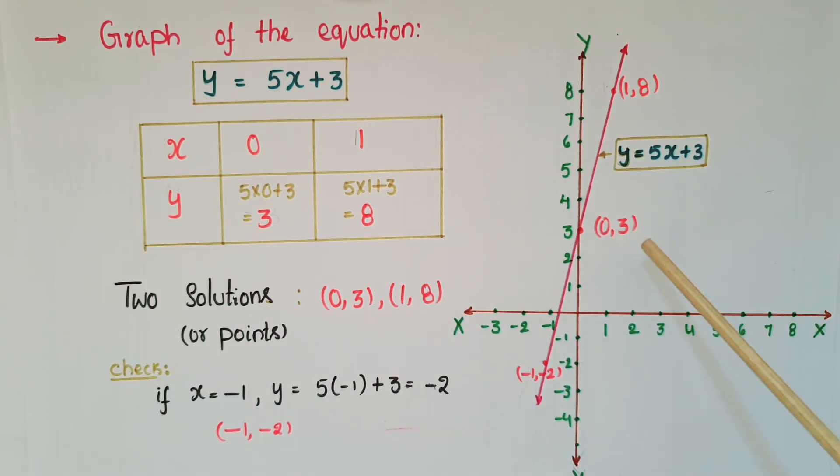Now mark 0 comma 3 and 1 comma 8 on the graph, then join these two points. You will get a line like this.